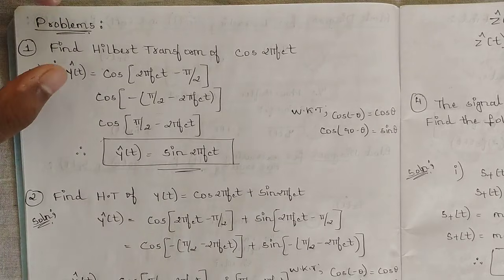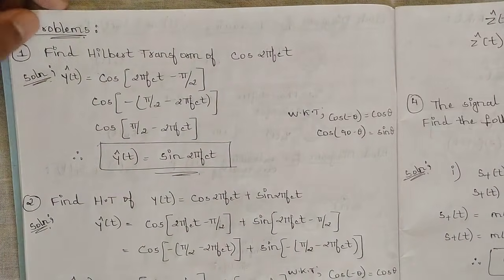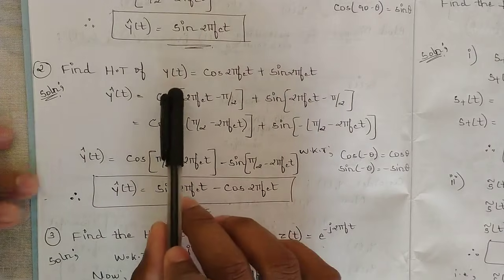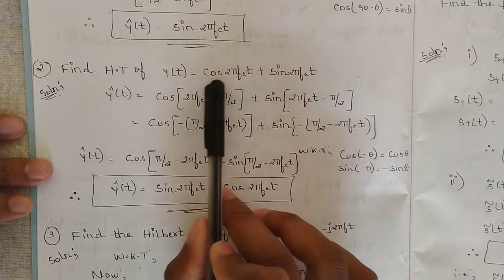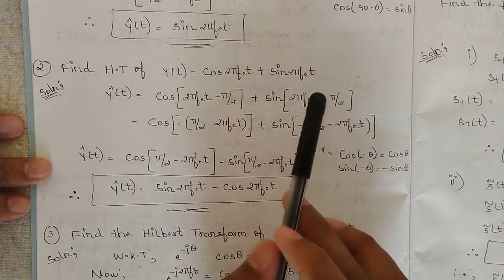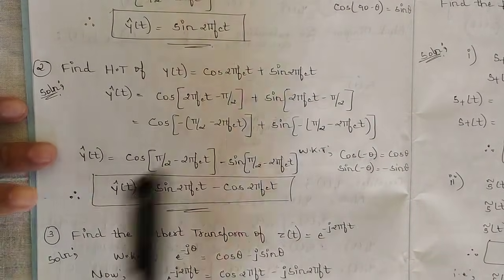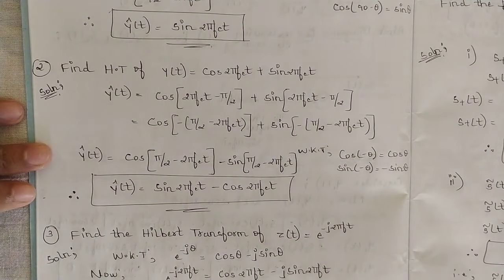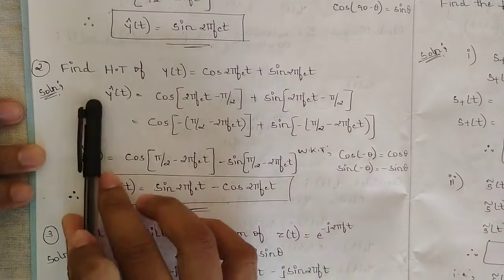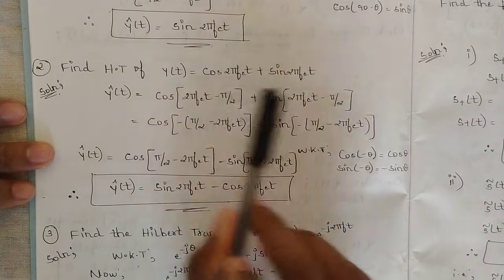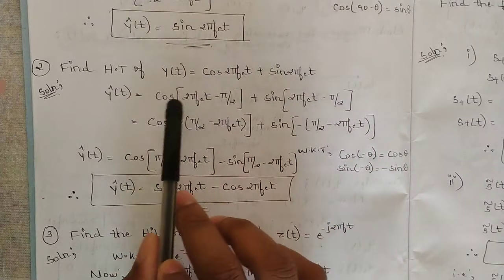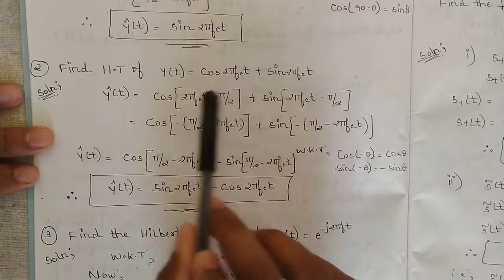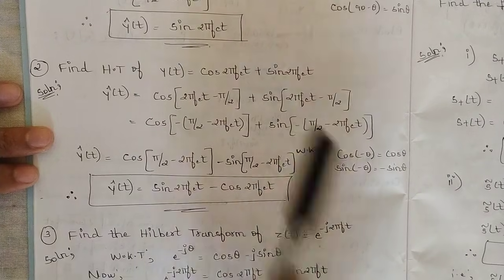Please note this down. The second problem is: find the Hilbert transform of y(t) = cos(2πfct) + sin(2πfct). This is the addition of cos and sin terms. You can solve them individually and add the final answers, or solve together. Solving together: ŷ(t) = cos(2πfct − π/2) + sin(2πfct − π/2). Then interchange the terms and take the minus sign outside.